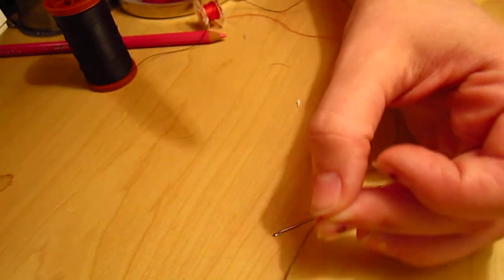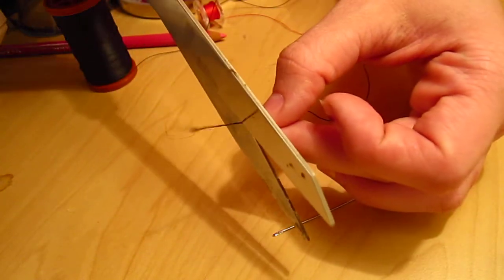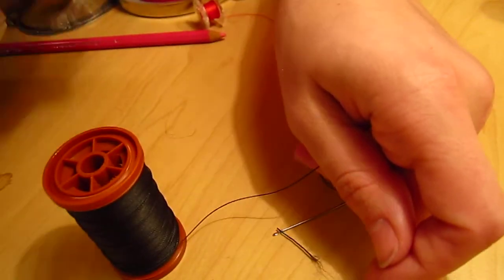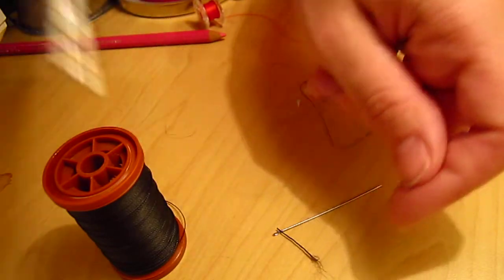Second, you're going to need some thread. You want something with a clean edge, not something frazzled like this is. So, give it a quick snip, and let's cut off a short length of thread just to show you.